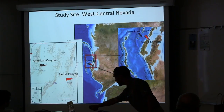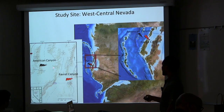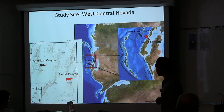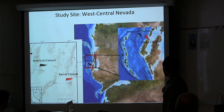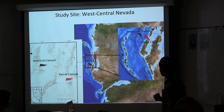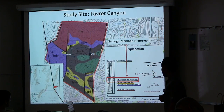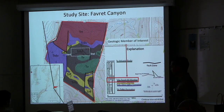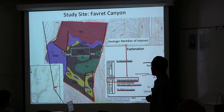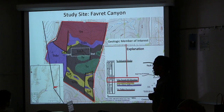The study sites for this project are located in the western United States. On a paleogeographic map of the Triassic, Favrit and American Canyon were on the coast during the Triassic, which supports the observation of marine rocks in what is now modern desert Nevada. The first study site is Fabric Canyon, which has been mapped and described for taxonomy — classifying fauna in groups.